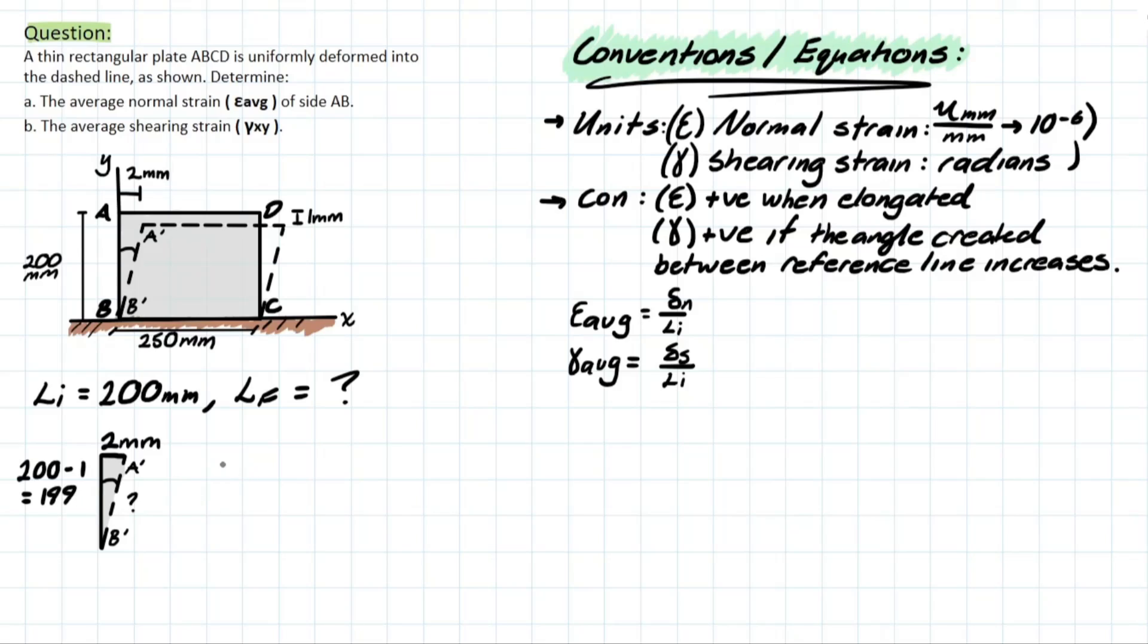You can then use this to determine the length of A'B', which is using Pythagoras' theorem. 199 squared plus 2 squared, that length up top. And this is going to equal to 199.01005 millimeters. We have to be very precise with these numbers because of how minimal the values of strain are going to be.